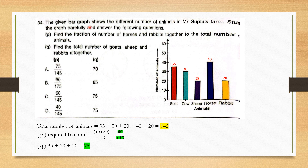Question number 34. The given bar graph shows the number of different animals in Mr. Gupta's farm. The numbers from the graph are: 35, 30, 20, 40 and 20. Statement P: find the fraction of horses and rabbits together to the total number of animals. Total animals: 35 plus 30 plus 20 plus 40 plus 20 equals 145. Horses are 40 and rabbits are 20, so 60. The fraction is 60 by 145. Statement Q: total number of goats, sheep, and rabbits — 35 plus 20 plus 20 equals 75. The correct answer is option C.